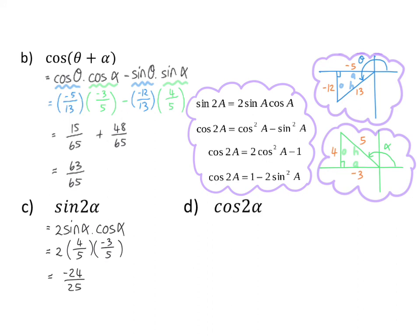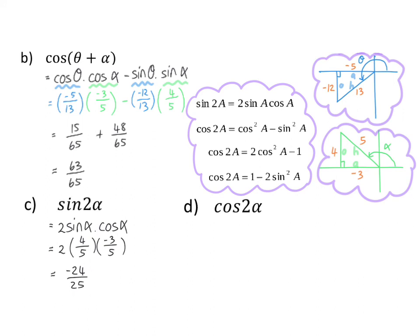In D, we are asked for the ratio of cos 2 alpha. For cos double angle, we have three identity options and it doesn't matter which you choose. I'm going to use the one that changes it to 2 cos squared alpha minus 1. For cos alpha, I use my triangle, putting minus 3 over 5 in a bracket with the square on the outside. Squaring first gives 9 over 25 in the bracket, which I multiply by 2 and then subtract 1 to get minus 7 over 25.